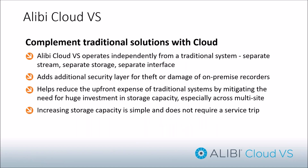The Alibi Cloud VS cameras are independent from a traditional system — separate stream, separate storage, separate interface. You may go into an environment where they don't have the bandwidth required for a certain number of cameras in the cloud, since the cloud solution does stream directly full-time. We have to take ISP speeds into account. If they can't put the infrastructure in place, you may need an on-premise recorder, but you can add one or two additional cloud cameras at the same location — adding security for theft or damage of on-premise recorders.